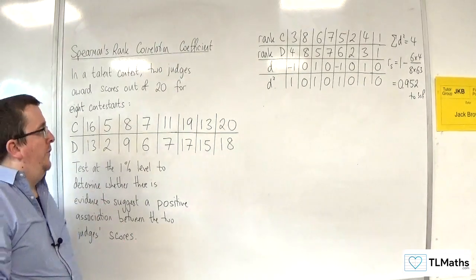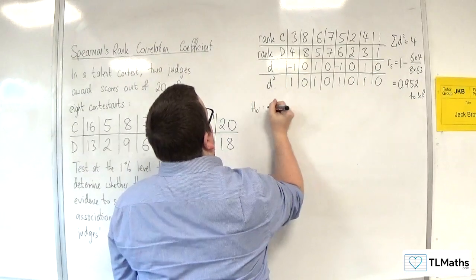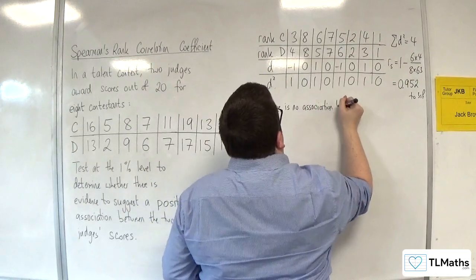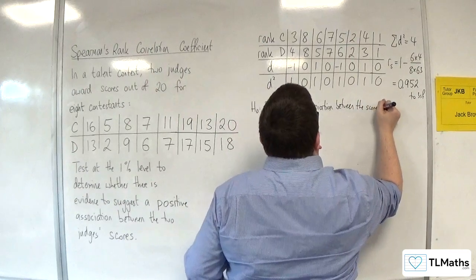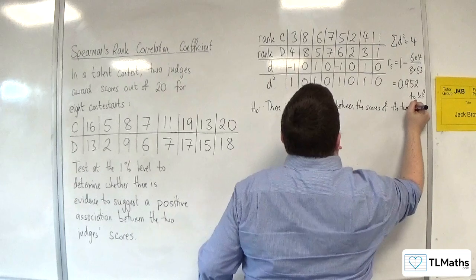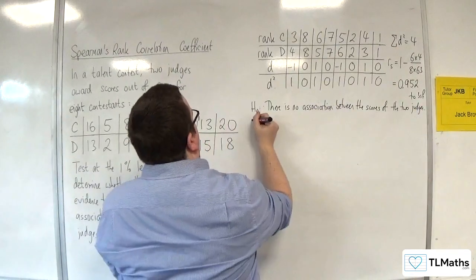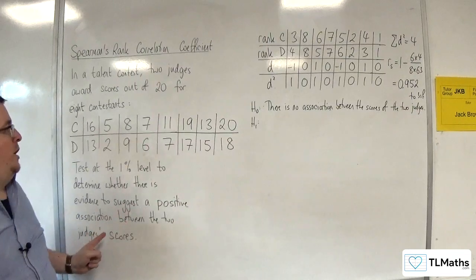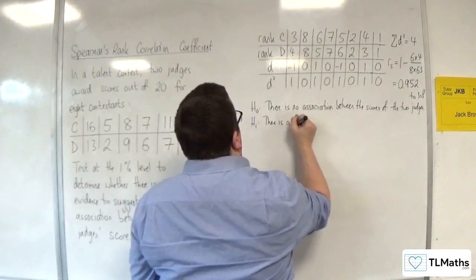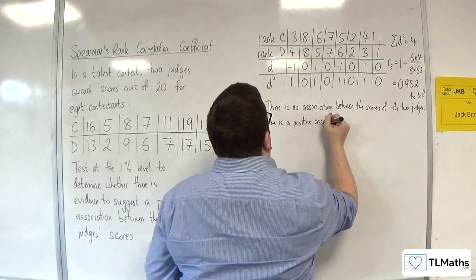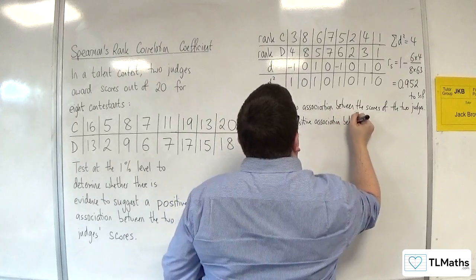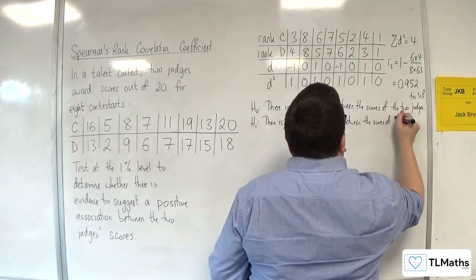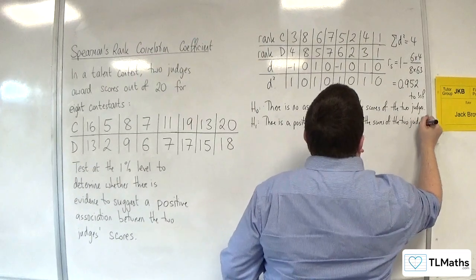So now the hypothesis test. We start off with H0: there is no association between the scores of the two judges. The alternative hypothesis, because we're looking at a positive association, is H1: there is a positive association between the scores of the two judges.